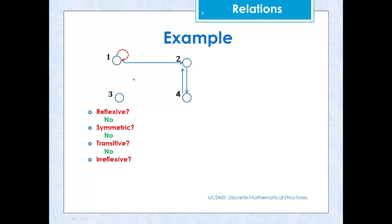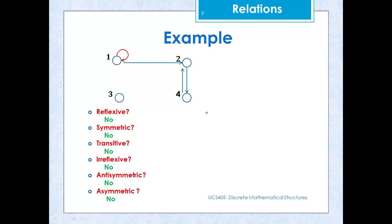Is it irreflexive? No, because we have a self-loop on one node. Is it antisymmetric? No, because we have an edge from 2 to 4 and also from 4 to 2 where 2 ≠ 4. Is it asymmetric? No, again because we have the pair (2,4) and (4,2), and also the pair (1,1) which is a self-loop and is not allowed in asymmetric relations.